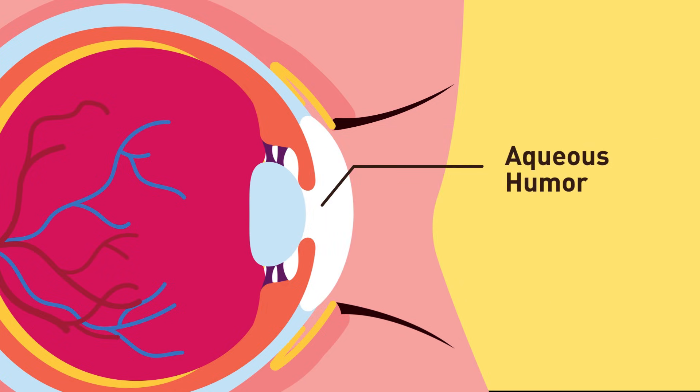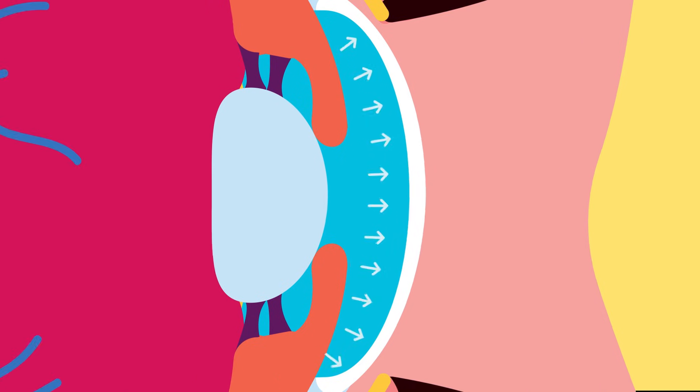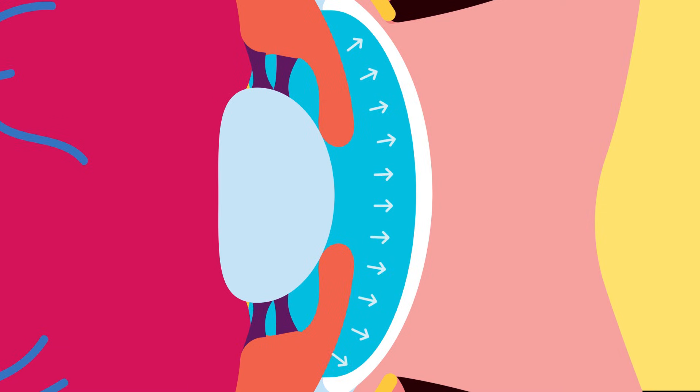The aqueous humor is a transparent, watery liquid in the anterior cavity. It has two main functions: it is a medium for diffusion of oxygen and nutrients, and secondly, it refracts light and maintains the shape of the eyeball.